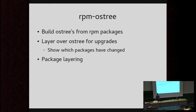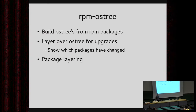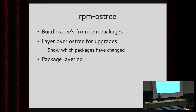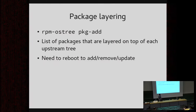rpm-ostree has a couple of different components. First, it has code to take a bunch of RPMs and assemble them into an OS tree. Second, it has client-side tools with a smarter interface for upgrading — for example, when you upgrade with rpm-ostree, it tells you which packages changed, the old version, and the new version. Finally, rpm-ostree adds facility for layering packages on top. You can imagine Fedora Workstation has 1,200 packages; in early cases we're not going to get those right. Maybe we forgot something — either you assemble your own OS tree or you need a way to add a few packages. That's what package layering is.